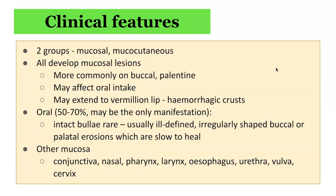Other mucosal surfaces that can be involved include the conjunctiva, nasal areas, pharynx, larynx, esophagus, urethra, vulva, and cervix. The diagnosis of Pemphigus vulgaris tends to be delayed in patients who present with only oral involvement, as compared to patients who present with skin lesions.